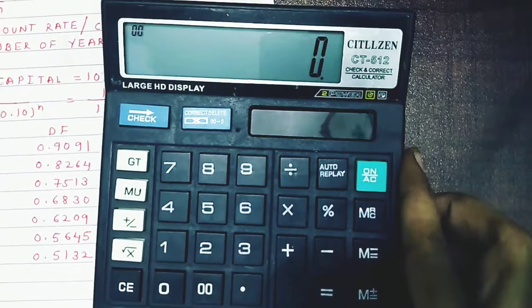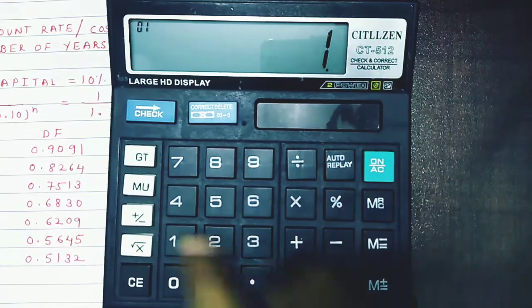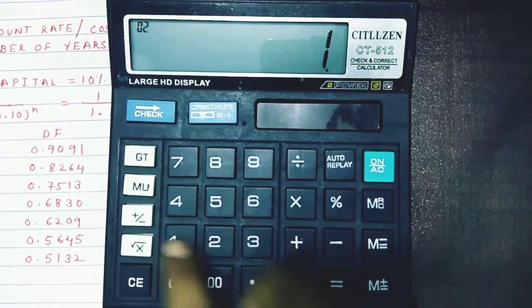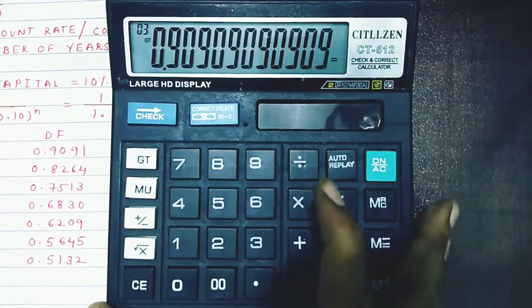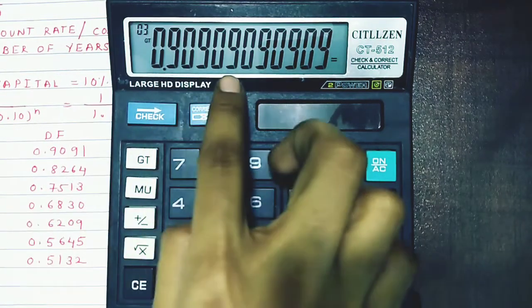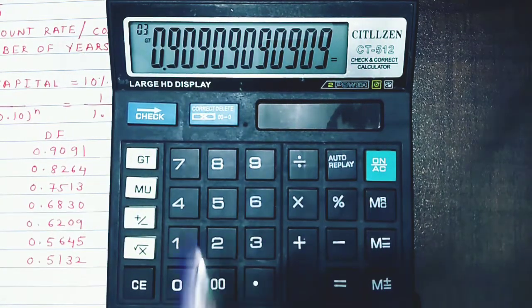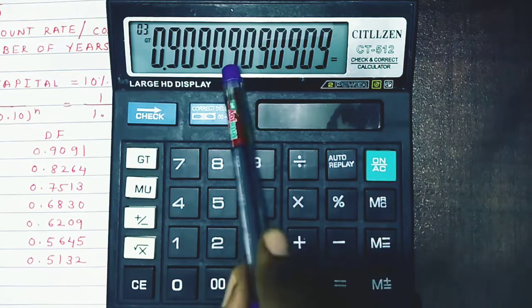For the first year, 1 divided by 1.1 gives you the discounting factor. In this situation, the fifth digit is greater than 5, so...